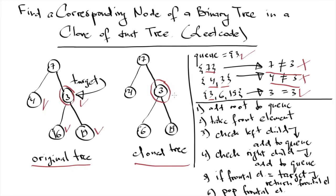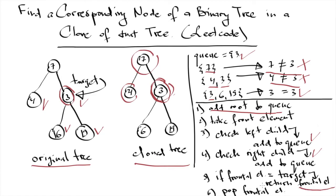The general BFS algorithm works as follows: first, add the root element to the queue. Then, for each iteration, check if there is a left child and add it to the queue, and do the same for the right child. Take the front element and compare it with the target — if they are equal, return the reference to that front element, then pop it. Continue this while the queue is not empty. If the target is never found, return null.